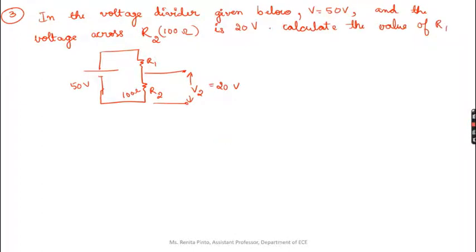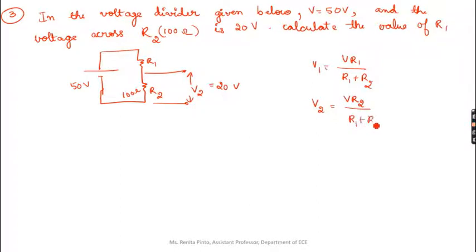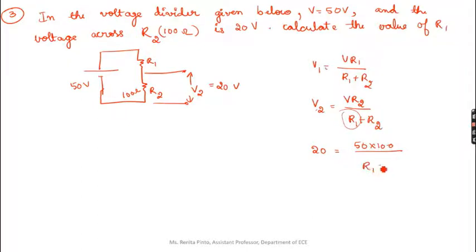The circuit has a 50V supply with R1 and R2 in series. R2 is 100Ω and V2 = 20V. Using the voltage divider rule: V2 = V × R2/(R1 + R2), so 20 = 50 × 100/(R1 + 100). You know V2, V, and R2, so you can solve for R1. From this equation, R1 comes out to 150Ω.